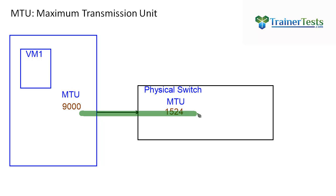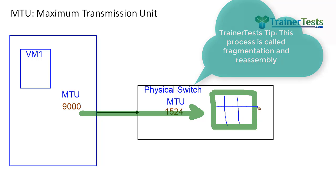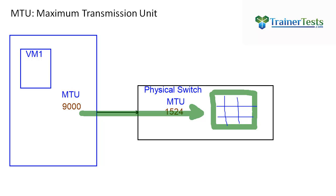The result is we're going to have these really large frames hitting the physical switch — frames that are larger than the physical switch can actually handle. As these large jumbo frames leave the ESXi host and hit the physical switch, the physical switch is going to say that's too big. It has to chop them up into smaller pieces into a size it can handle. With every frame received, it has to take that frame, break it up, append headers on each of those smaller frames before it can switch that traffic. The physical switch is going to be utilizing a whole lot of CPU resources to fragment and reassemble those frames.